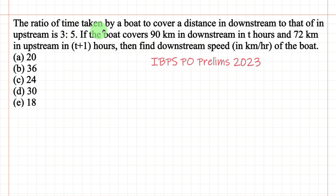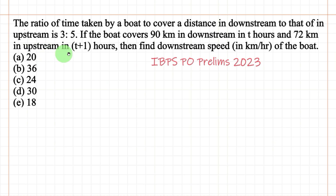The ratio of time taken by a boat to cover a distance in downstream to that of in upstream is 3 to 5. If the boat covers 90 km in downstream in T hours and 72 km in upstream in T plus 1 hours, then find the downstream speed in km per hour of the boat.